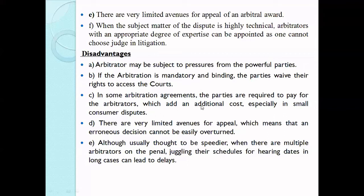There are very limited venues for appeal, which means an erroneous decision can be difficult to overturn. Because the number of arbitration tribunals is very few, they may have a heavy burden and could give a defective decision. Also, although arbitration is usually thought to be speedier, when there are multiple arbitrators on the panel, juggling their schedules for hearing dates in long cases can lead to delay. When there are a number of arbitrators, each may provide different schedules and dates for hearing matters, slowing down the process rather than speeding it up.